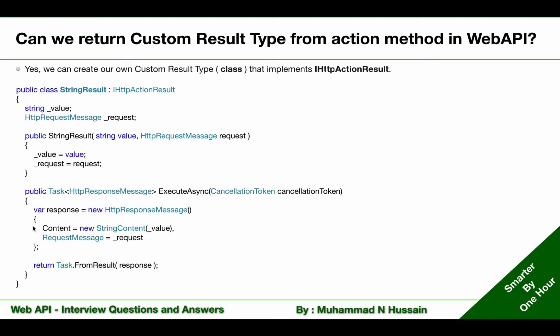The implementation of that method is quite straightforward. I am using value and request, which I will pass from the controller to this custom result type, and I am using those values to set the content and request message of a newly created HttpResponseMessage, which I will use to return a result.